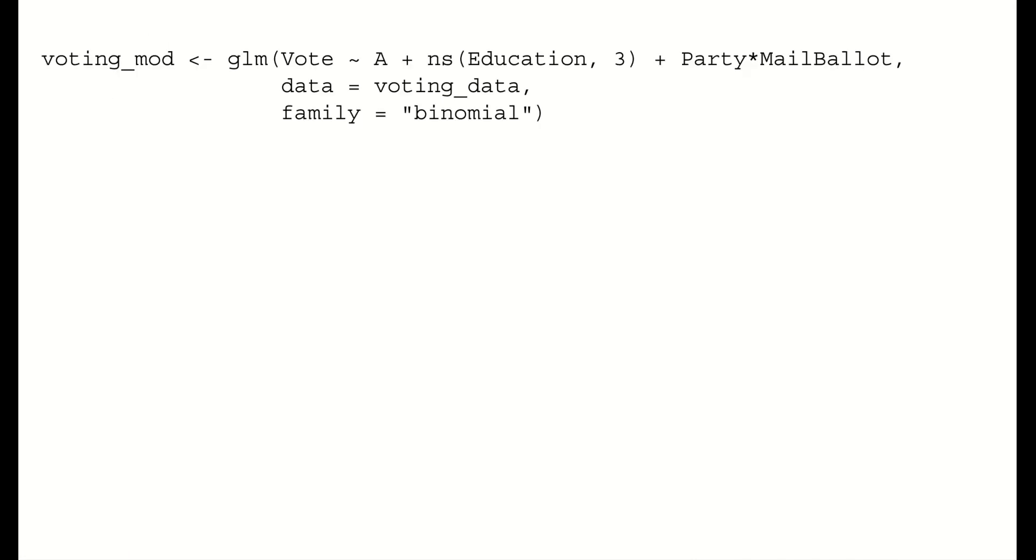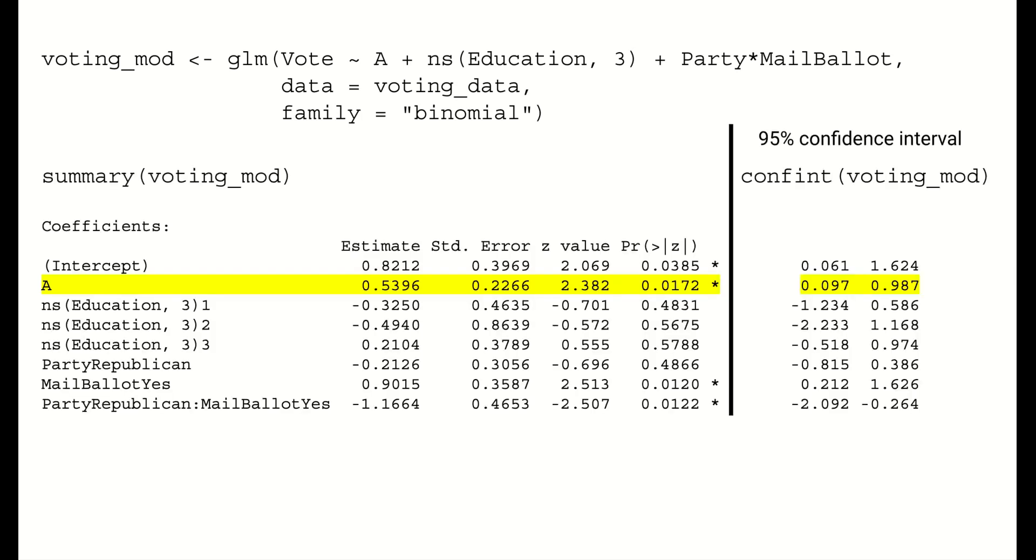Combining our insights from our visualizations, we might fit a logistic regression model that looks like this in R. We've included our treatment variable, which is called A in our data, a nonlinear relationship with education, and an interaction between political party and having a mail-in ballot. When we look at the summary output, we'll focus our attention on the results for the treatment variable, the coefficient estimate itself, which is an estimate of the average causal effect, as well as inferential metrics like the confidence interval and p-value.